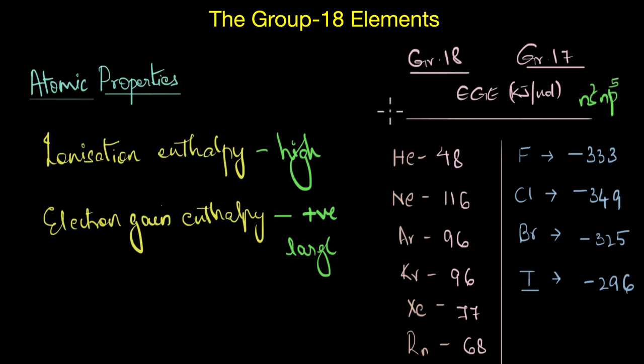Whereas that of Group-18 is NS2 NP6. That is, an addition of an electron will result in a highly stable state for halogen. But in the case of noble gas elements, the electronic configuration is already very stable. So adding an extra electron will only make this unstable.